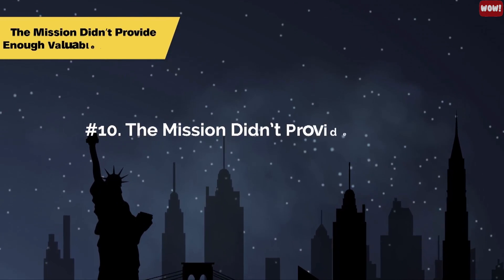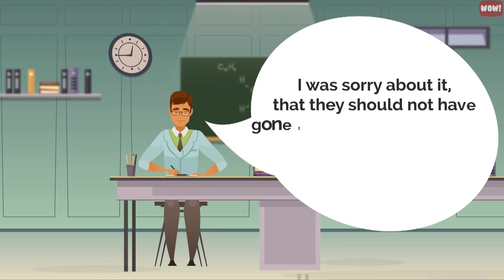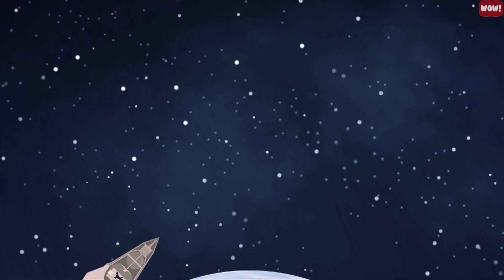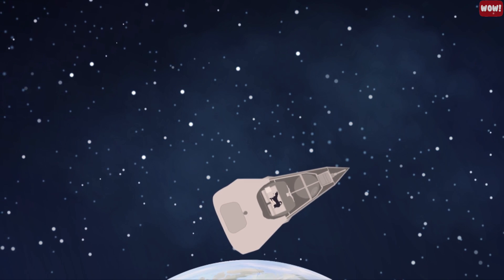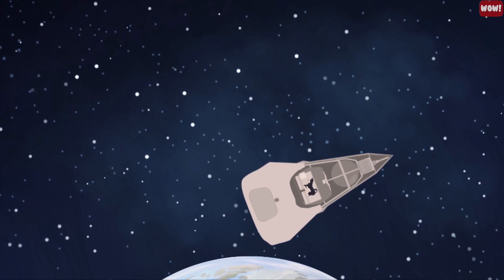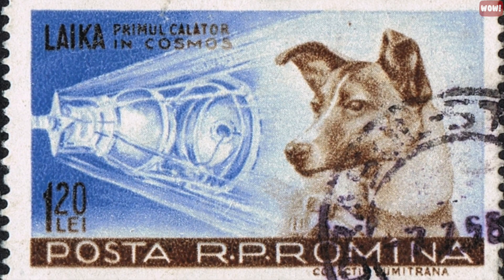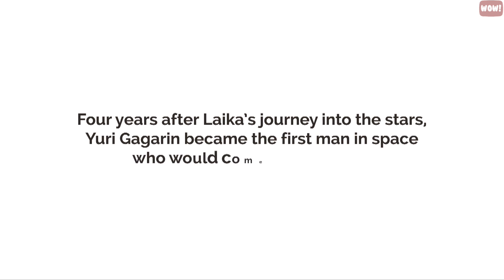Number 10: The mission didn't provide enough valuable information. One of the scientists who was involved in Laika's mission stated that he was so sorry about it, that they should not have gone through with the mission, and that they did not learn enough from it to justify her death. While Laika did prove to the world that a living thing could be sent into space and survive the trip, the entire endeavor serves more as a symbolic gesture than a scientific one. In the end, the Soviets just wanted to be the first to have an animal orbit the Earth, and it ended up being a tragic tale. Four years after Laika's journey into the stars, Yuri Gagarin became the first man in space who would come home safely.